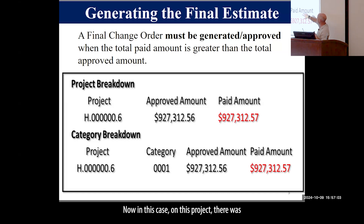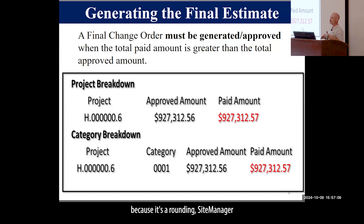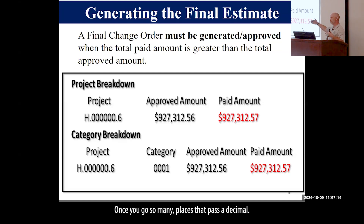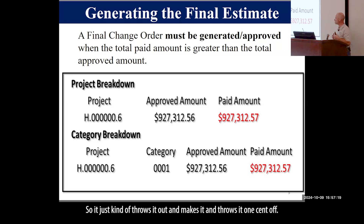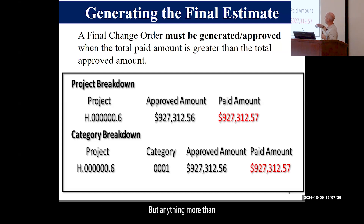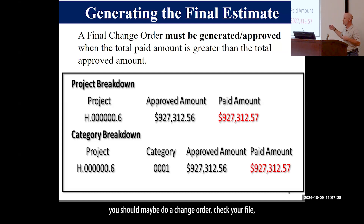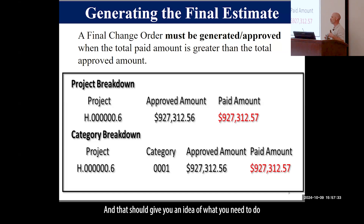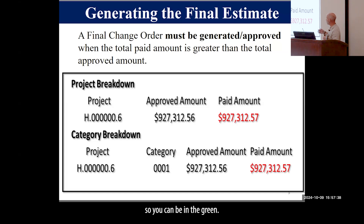In some cases it may be only a one cent difference — we don't worry too much about one cent because it's a rounding issue. Site Manager does some weird rounding once you go many decimal places out, so it can throw it off by one cent. But anything more than a dollar or so, you should do a change order. Check your underrun report — that should give you an idea of what you need to do with the final change order to bring those quantities up so you can be in the green.